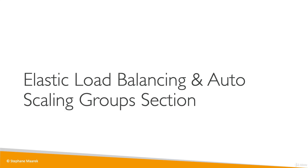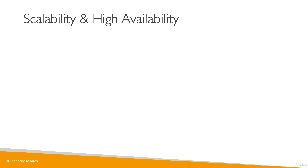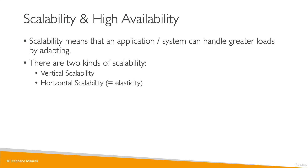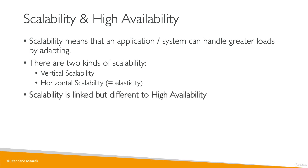Welcome to this section on elastic load balancing and auto scaling groups. This is a section where we really see the power of the AWS cloud and how these new paradigms help our applications scale seamlessly. Let's discuss the concept of scalability and high availability. If your applications can scale, that means they can handle greater loads by adapting. There are two kinds of scalability in the cloud: vertical scalability and horizontal scalability, also called elasticity. Scalability is linked but different to high availability, and these things will be discussed in this lecture.